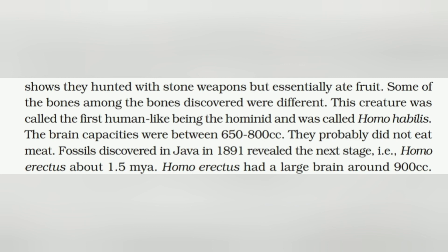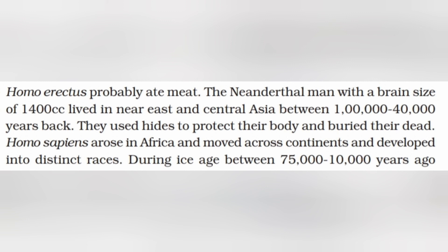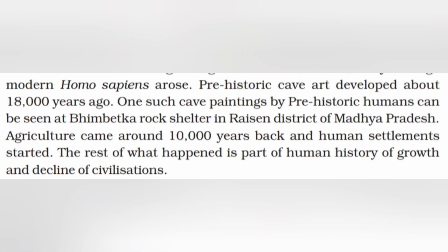Homo habilis probably did not eat meat. Fossils discovered in Java in 1891 revealed the next stage — Homo erectus, who lived about 1.5 million years ago and had a large brain of around 900 cc. Homo erectus probably ate meat. The Neanderthal men, with a brain size of 1400 cc, lived in Near East and Central Asia between 1,000,000 to 40,000 years ago. They used hides to protect their body and buried their dead. Homo sapiens arose in Africa, moved across continents, and developed into distinct races. During the Ice Age, between 75,000 to 10,000 years ago, modern Homo sapiens arose.